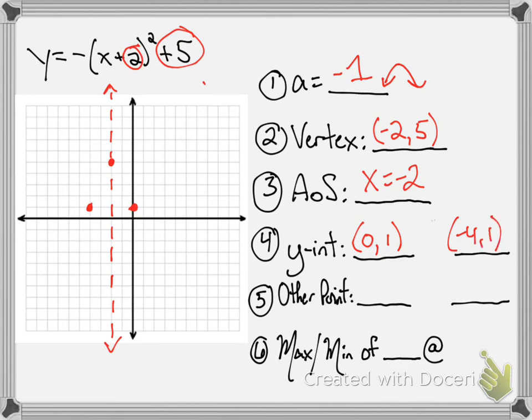Now I'm going to pick another point. I'm going to pick something close to the line. I'm going to just pick negative 1 because we haven't used it yet, and it's even closer to my line of symmetry. So I plug that in, and I will get 4. Then I'll reflect it. That will get me at the point negative 3 comma 4.